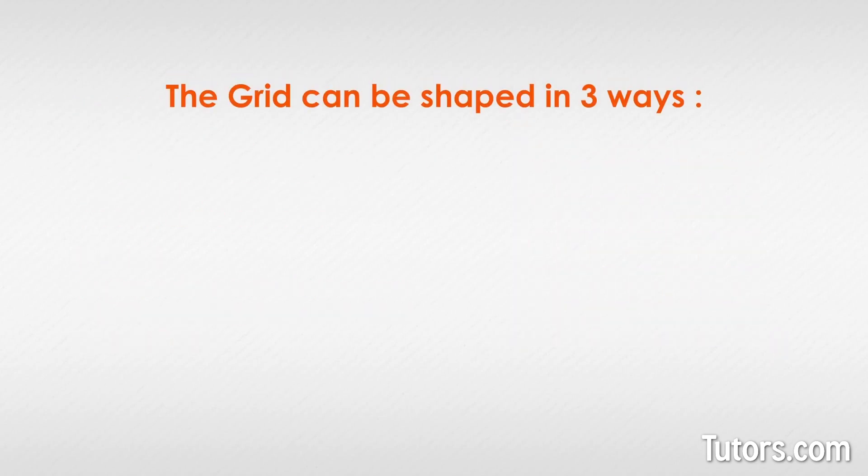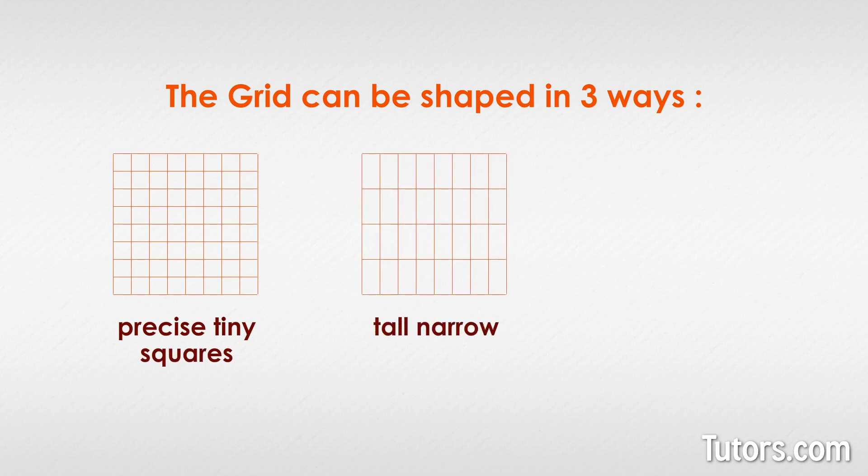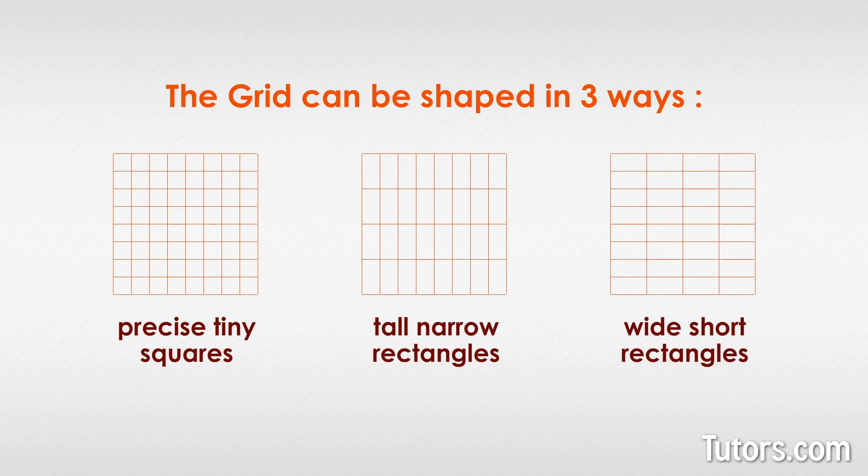The grid can be shaped in three ways: precise tiny squares, tall narrow rectangles, or wide short rectangles. This is an important detail because sometimes line graphs deliberately exaggerate one axis to emphasize the information.